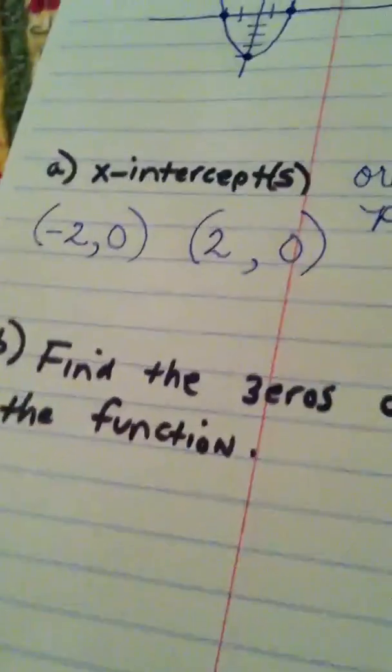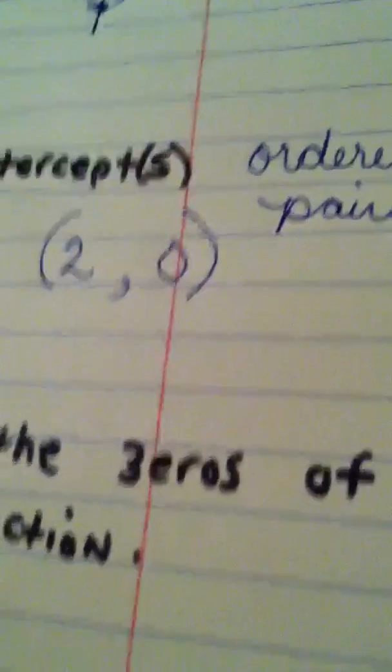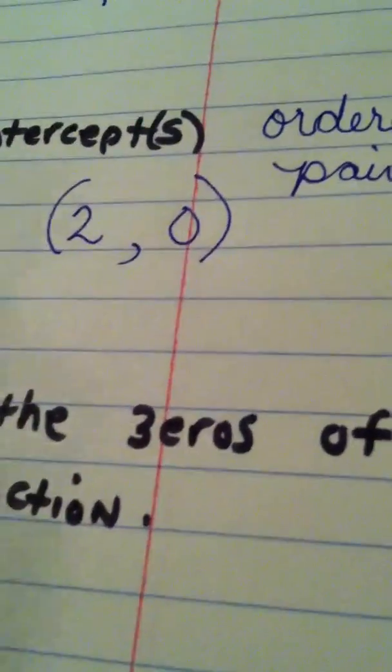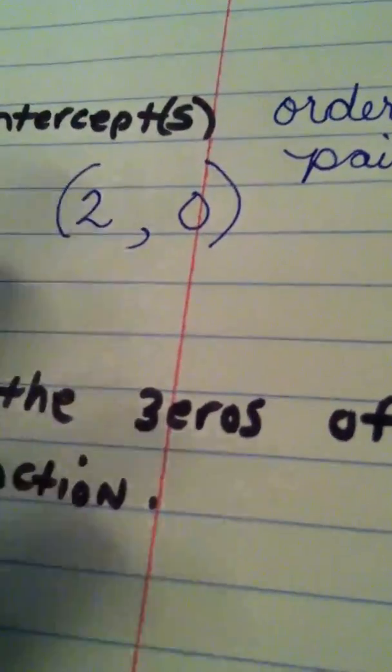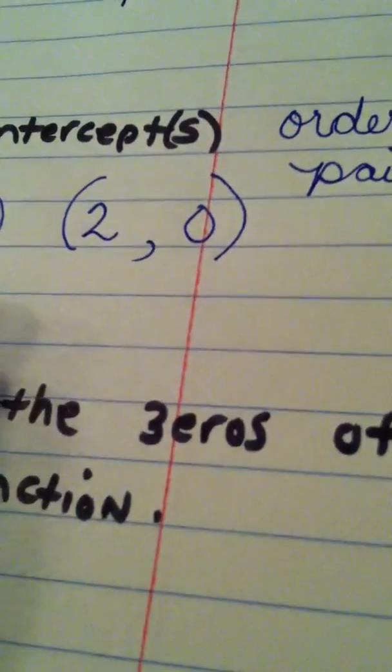The second question here says, find the zeros of this function. Okay. A mathematical definition of a zero: A zero is an x value that causes the y value to become 0.